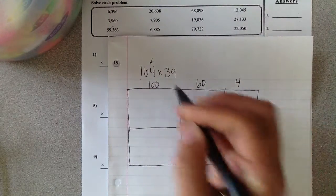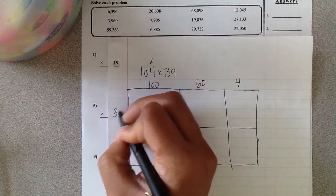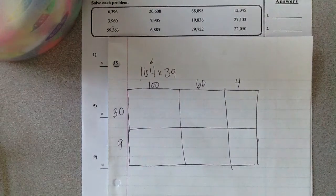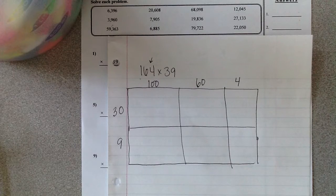I have 100 because that's what the one really represents in the hundreds place, 60 because the 6 is in the tens place, and 4. I'm going to break it apart over here. I have 39. The 3 is in the tens place so it's worth 30, and the 9 goes here.